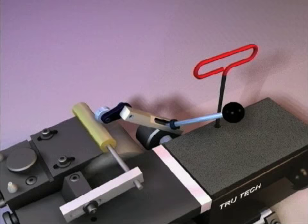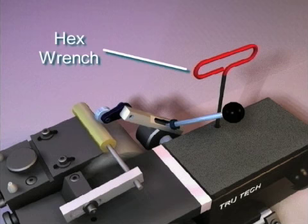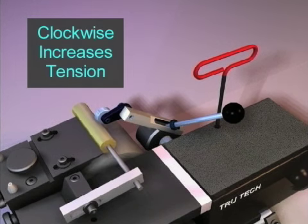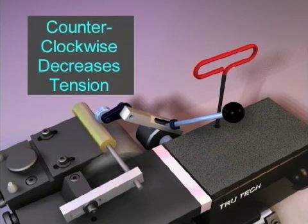Now it's time to adjust the tension of the pressure roller. To do this, insert a 3/16 inch hex wrench in the top of the unit. Turning the screw clockwise will increase the tension, while turning counterclockwise will lighten the tension.